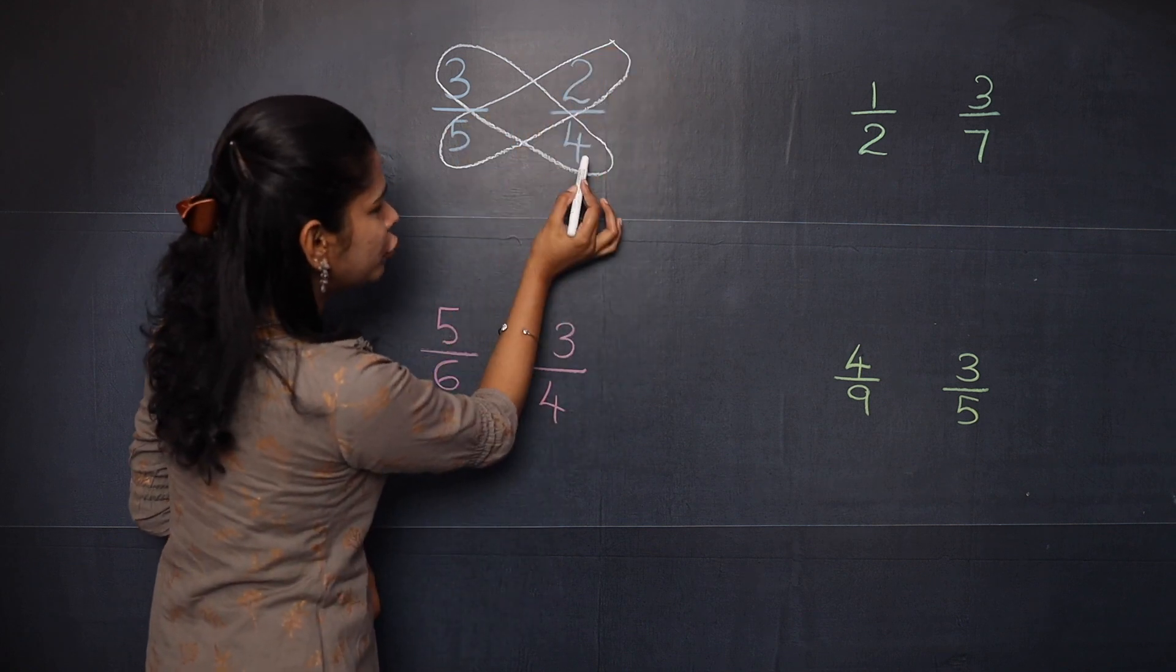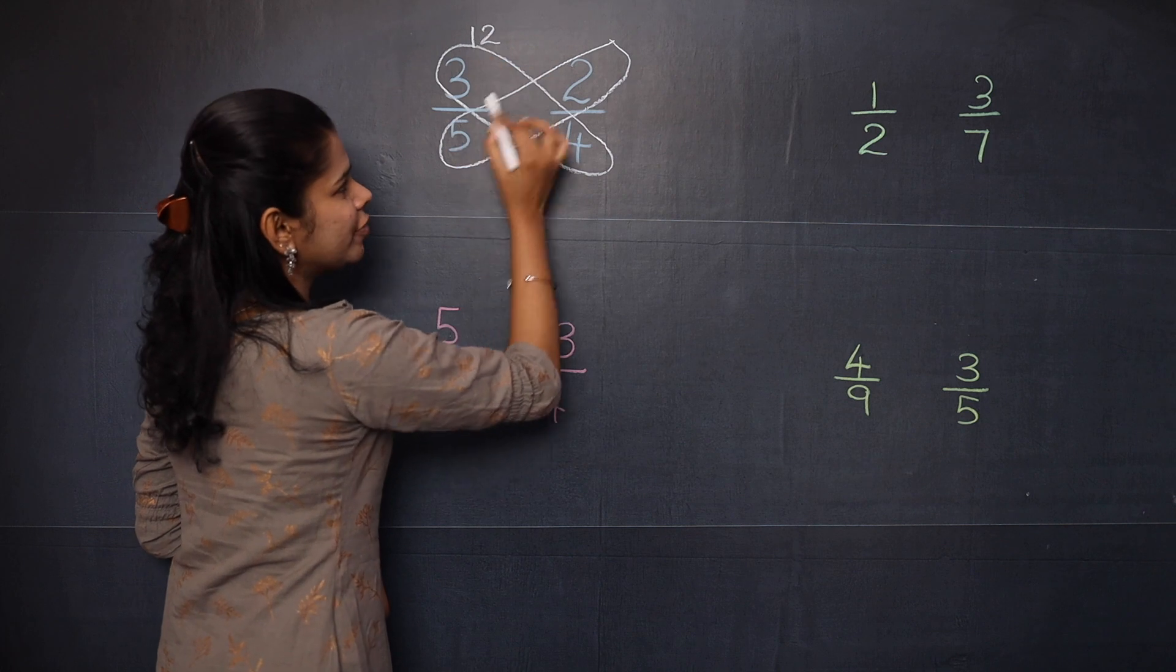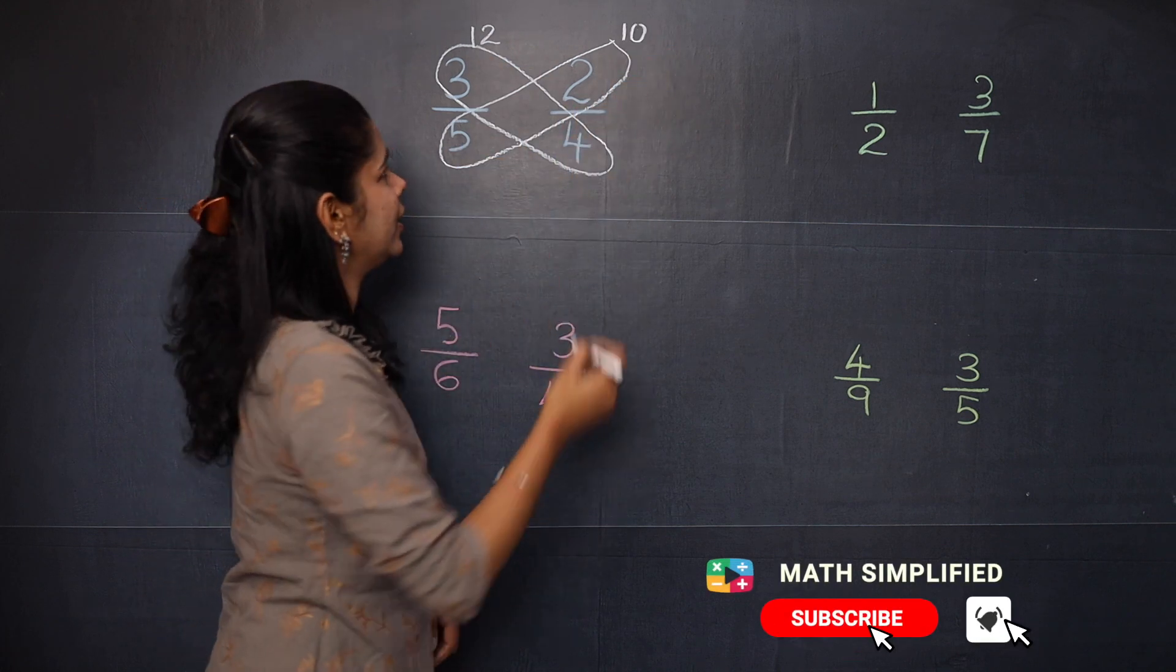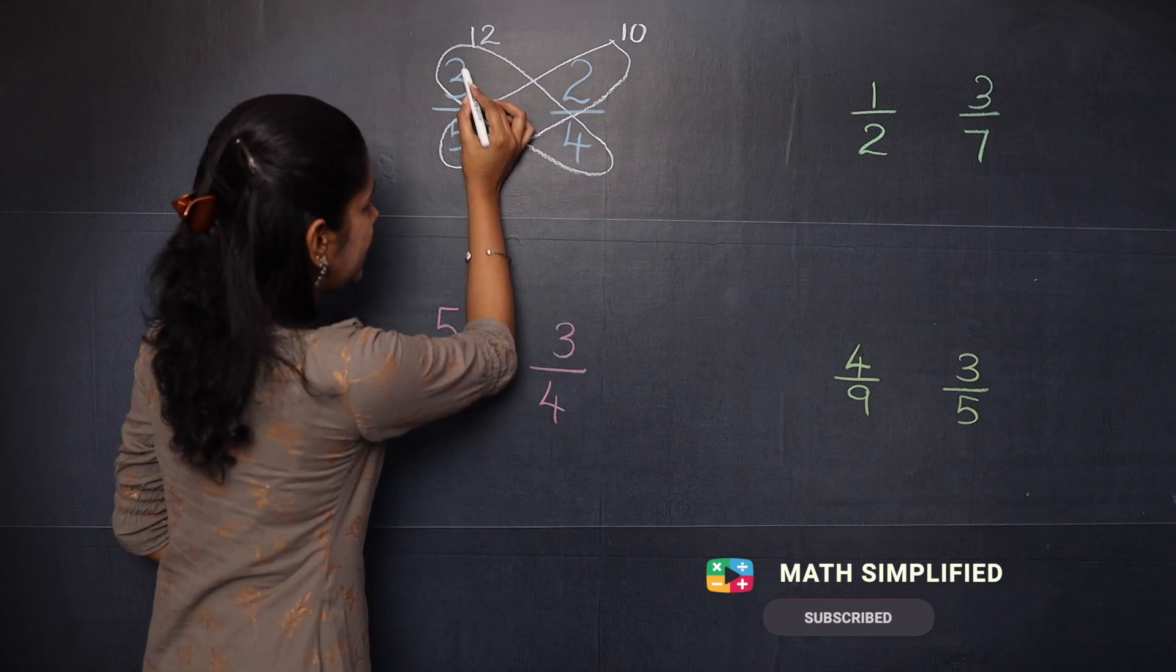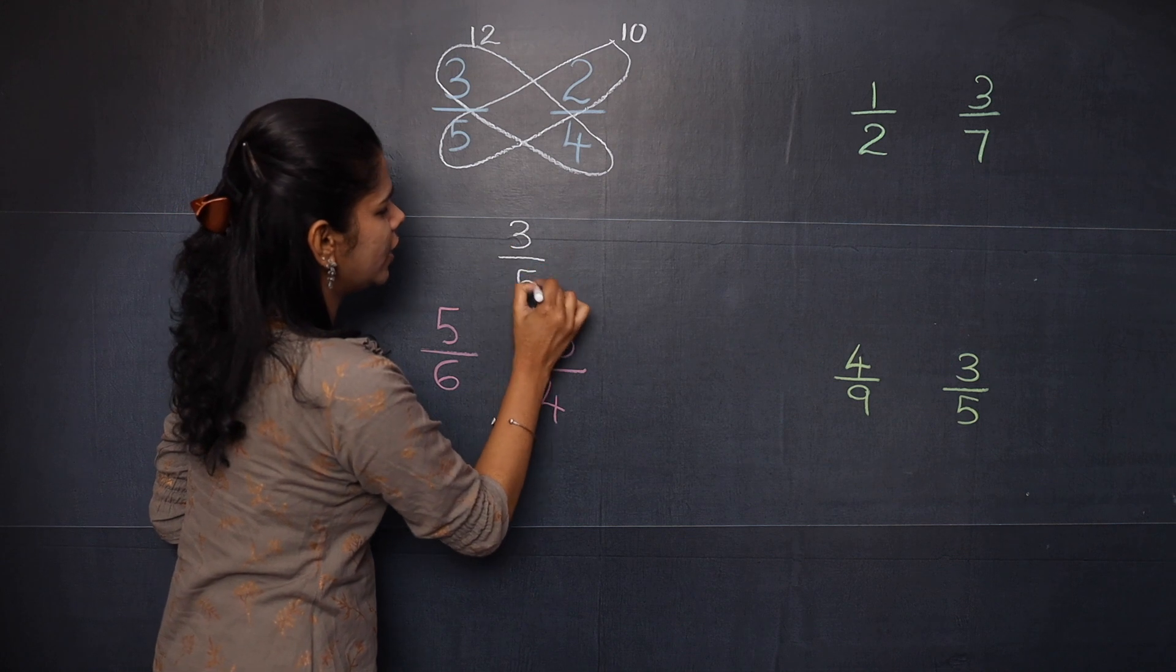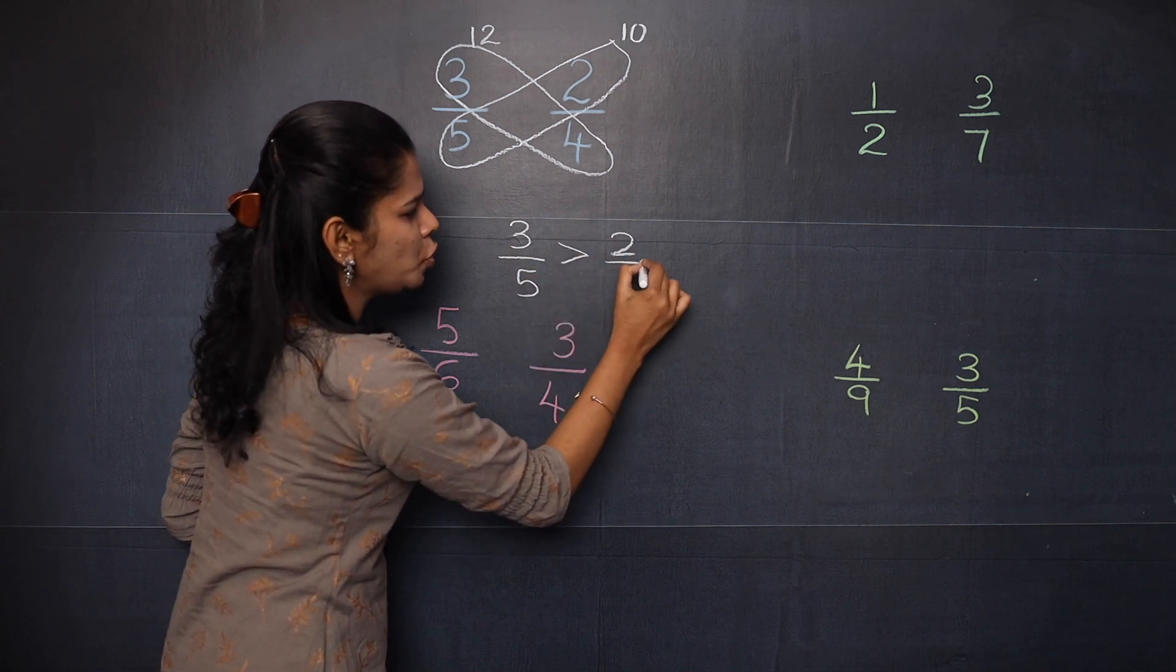So what is 3 into 4? It is 12. What is 5 into 2? It is 10. So which is greater here? 12 is greater, which means the fraction just below 12, 3 by 5, is greater than 2 by 4.